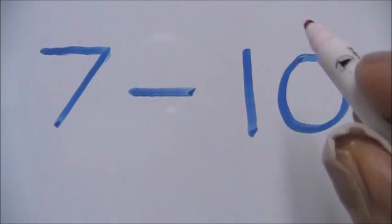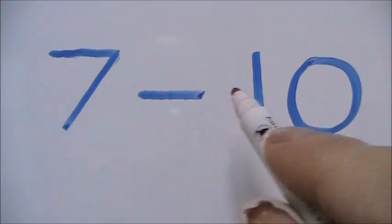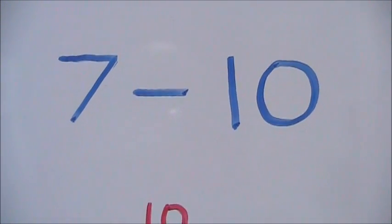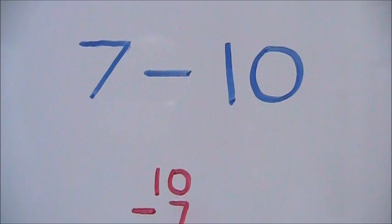When we're subtracting a larger number from a smaller number, such as 7 minus 10, we're going to be taking the difference of the two numbers and then making our answer negative.